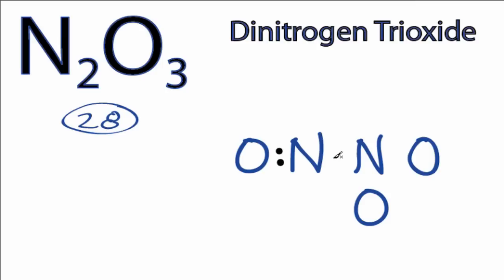We'll put two electrons between atoms to form chemical bonds. We've used eight valence electrons.